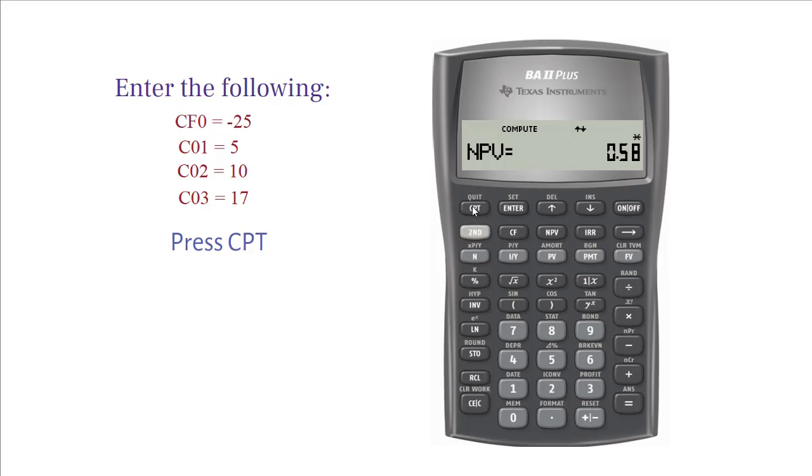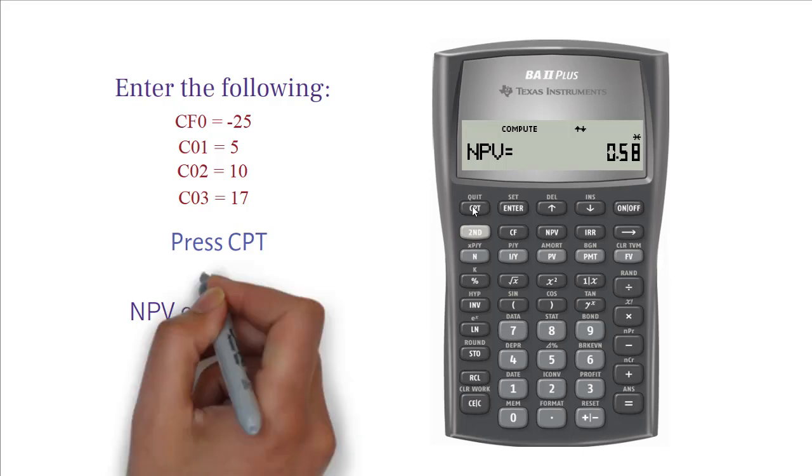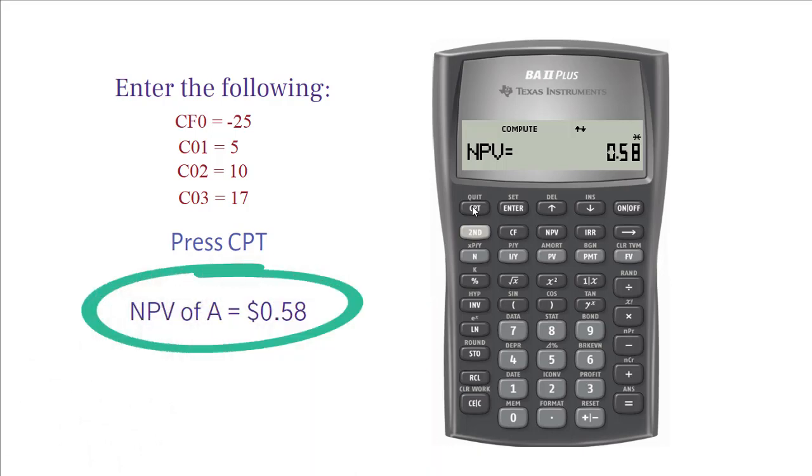You get NPV for project A equals 0.58. If you follow the same steps, you will get the NPV for project B as 1.04.